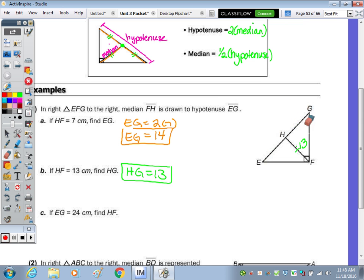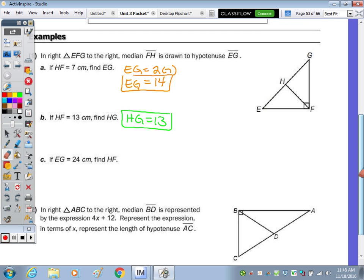Taking a look at C, it says that EG is twenty-four. So if E to G, if the hypotenuse is twenty-four, the median is half. So HF, which is the median, HF is going to be half of twenty-four, which is twelve.